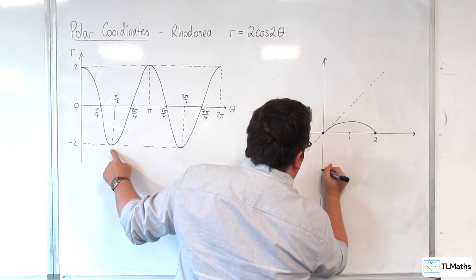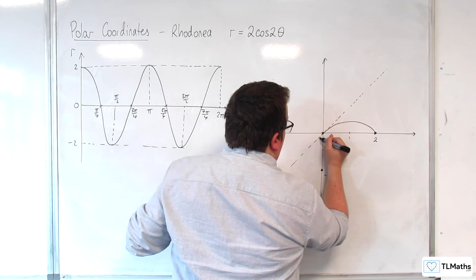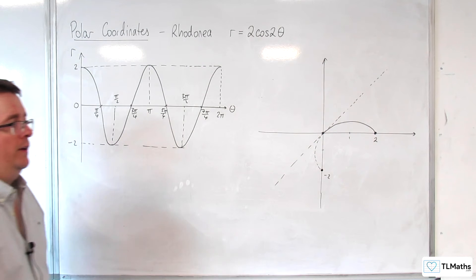And because r is negative, we then draw the curve, the broken curve, with the dash curve.